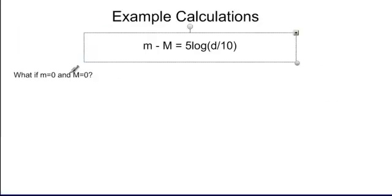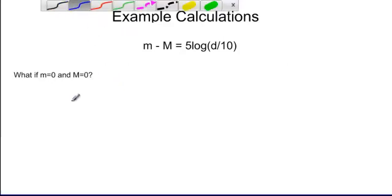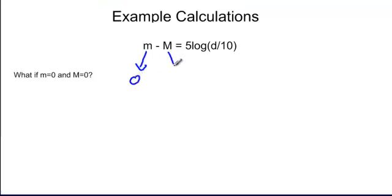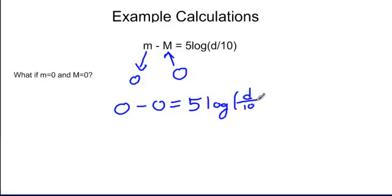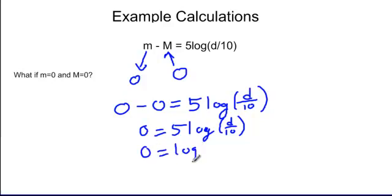Now let's do a couple of example calculations here. Let's do the simple example. Let's say the two magnitudes are exactly the same. So what do we do? We put our numbers into the equation here. So little m here, this is 0, capital M, that's 0. So 0 minus 0 is equal to 5 times the logarithm of the distance divided by 10. 0 minus 0 is 0, so that's easy. 5 log of distance over 10. Now 0 divided by 5 is going to be 0. We like this one. It works out nice and simple.